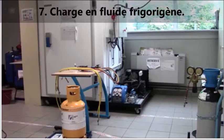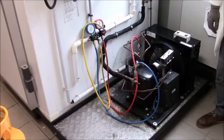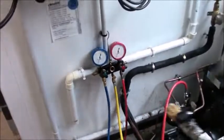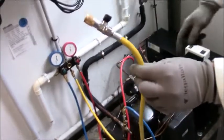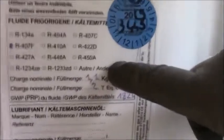Dans ce chapitre, nous allons réaliser la charge en fluide frigorigène. On retrouve ici notre circuit frigorifique que l'on a tiré au vide. Il faudra maintenant relier le flexible jaune à la vanne numéro 5 — c'est le robinet rouge qui est sur notre bouteille de transfert — et charger l'installation avec la quantité indiquée sur la fiche signalétique de la chambre froide. Ici, il faudra recharger l'installation avec 1,1 kg de fluide de type R407F. Nous avons ici notre installation qui est tirée au vide — le vide est bien maintenu, nos manomètres sont toujours sur moins 1 bar. On n'oublie pas qu'il faudra recharger 1,1 kg de fluide frigorigène de type R407F.